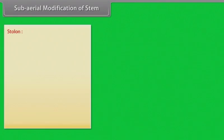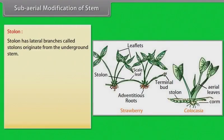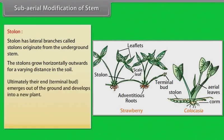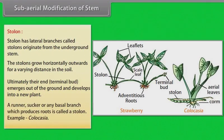Stolons are lateral branches that originate from the underground stem. The stolons grow horizontally outwards for a varying distance in the soil. Ultimately their terminal bud emerges out of the ground and develops into a new plant. A runner, sucker, or any basal branch which produces roots is called a stolon. Example: Colocasia.